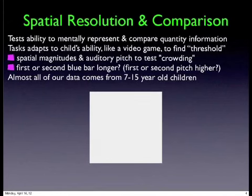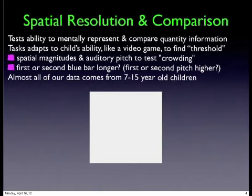We do a lot of experiments about spatial resolution and comparison. The notion is that we have different resolutions like a 1-megapixel and a 10-megapixel digital camera. If you can't represent as much information, you can't make such good comparisons, and then you can't learn about subtle differences. We vary this in experiments — like a video game — that tries to find your level of accuracy. If you're doing well it makes it harder; if doing badly, easier. We test with spatial extent, length, time, and auditory pitch.